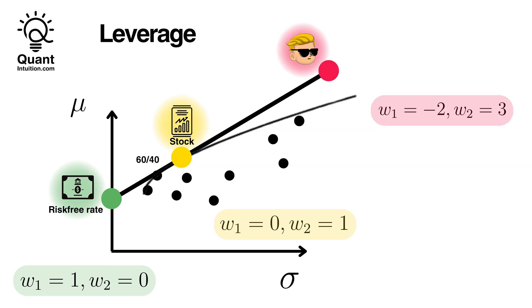However, what happens if W1 becomes negative? By shorting a bond, essentially borrowing funds, you can amplify your stock investment, pushing W2 beyond 1. This strategy is known as leverage and maintains the expected excess return to standard deviation ratio. Theoretically, leveraging allows reaching any point on the line provided you're prepared for the risks. So leverage amplifies both gains and losses, meaning a slight market downturn can significantly impact your portfolio.